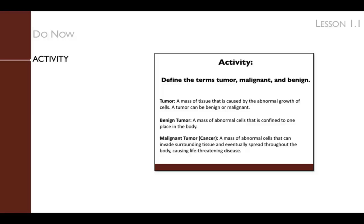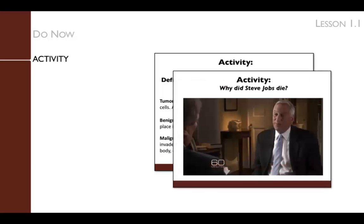A fast-growing, benign tumor can be dangerous, whereas a slow-growing, benign tumor will not be. Similarly, a slow-growing, malignant tumor may not be life-threatening. Next, we watch a short clip from the show 60 Minutes featuring Steve Jobs's biographer, Walter Isaacson, who states that Steve Jobs felt he had made a fatal error when he delayed his pancreatic surgery by nine months.